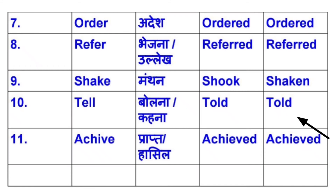Next है ACHIEVE — A-C-H-I-E-V-E. Achieve मतलब होता है प्राप्त करना या हासिल करना। इसका V2 होगा Achieved, और V3 भी Achieved होगा।